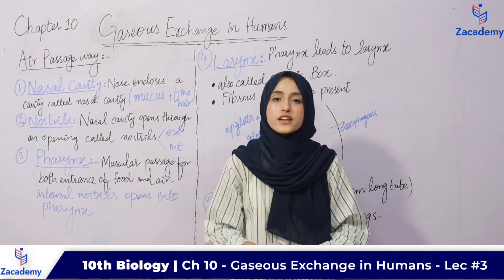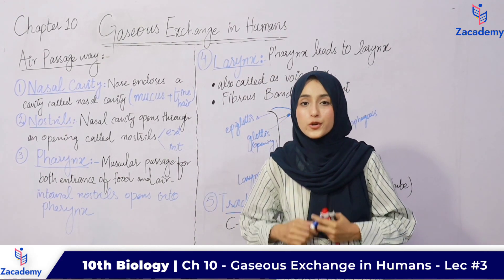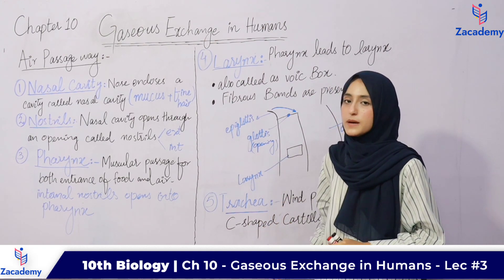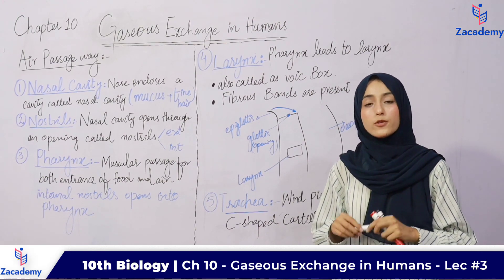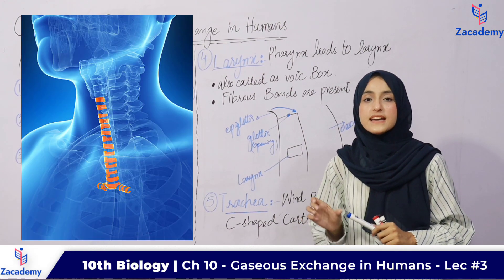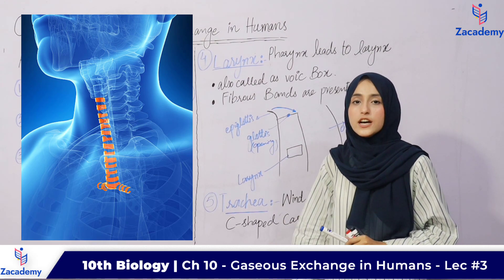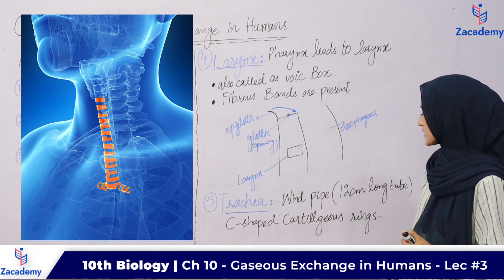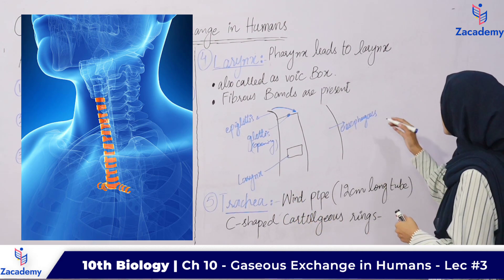Trachea, dear students, is also called the wind pipe. It is a 12 cm long tube. After the larynx, the trachea is present. Inside the trachea, C-shaped cartilaginous rings are present which keep the airway open.